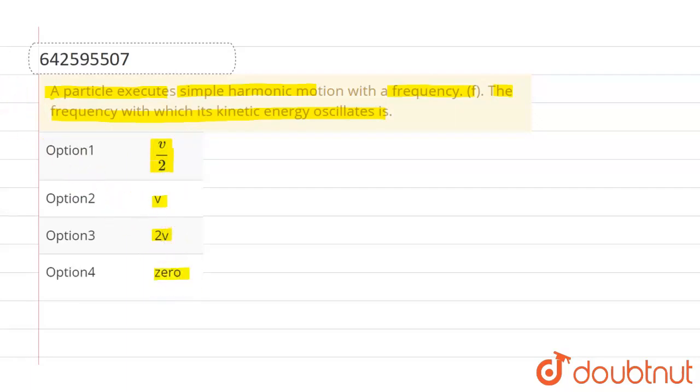Now as we know that at mean position, the kinetic energy is maximum since velocity is maximum at mean position, hence kinetic energy is maximum.